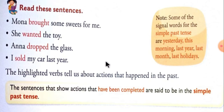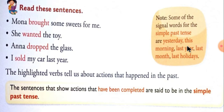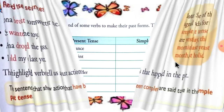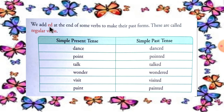Note: some of the signal words for the simple past tense are yesterday, this morning, last year, last month, last holidays. We add ED at the end of some verbs to make their past forms. These are called regular verbs.